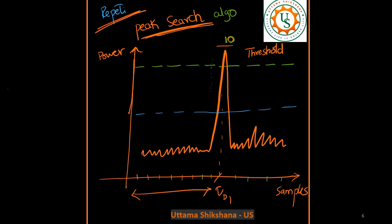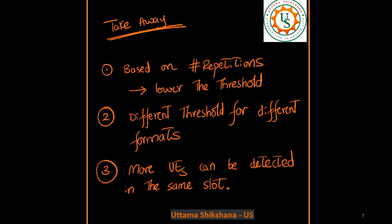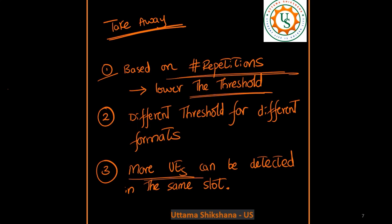To support detection at a lower threshold, as I mentioned in the previous video, one can go for more repetitions by choosing a different PRACH format. When more repetitions are used, averaging is done in the PRACH detector so that noise variations are reduced to a greater extent, and one can reduce the threshold to a lower value — threshold number two — which helps accommodate more UEs. Based on the number of repetitions, the threshold value can be set optimally, allowing more UEs to be detected in the same slot.